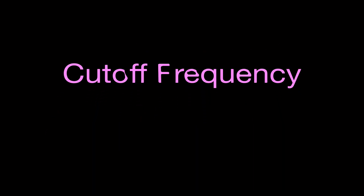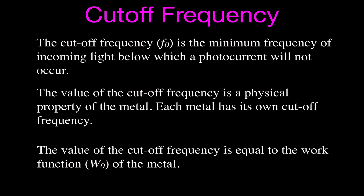Okay, let's get started. Step-by-step science. This is the cutoff frequency. I'm just going to give you a little bit of definitions here. The cutoff frequency, which is F0, is the minimum frequency of incoming light below which a photocurrent will not occur. So if we have a frequency less than the cutoff frequency, below the cutoff frequency, then we'll get no photoelectrons and no photocurrent.